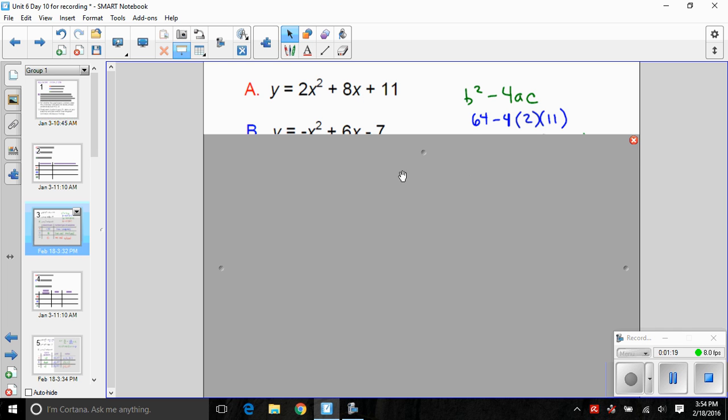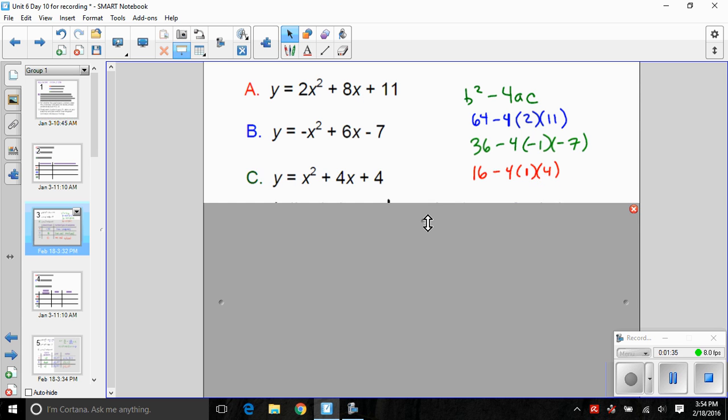In the same way, we could evaluate the discriminant for equation B. B squared would be 6 squared is 36 minus 4 times a, in this case negative 1, times c, in this case negative 7, and that would give us 8. We can do the same thing for equation C. B squared, 4 squared is 16, minus 4 times 1 times c is 4, and it looks like we get zero.